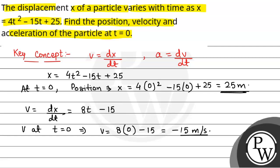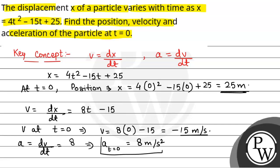Now, acceleration is given by dv by dt. We have v equal to 8t minus 15, so dv by dt is equal to 8. Therefore, acceleration at t is equal to 0 will be equal to 8 meters per second squared.